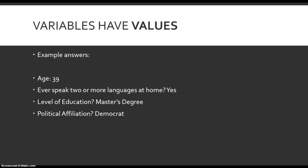Here are a couple of examples. When asked for your age, you provide a number. When asked whether or not you speak two or more languages at home, you say yes or no. When asked for your level of education, you give a category — a bachelor's degree, a high school degree, or an associate's degree. And when asked about political affiliation, you also provide a category. So there's another example of a variable that has a value which is a category. This leads us into the different levels of measurements for each variable.